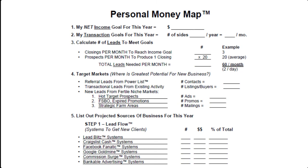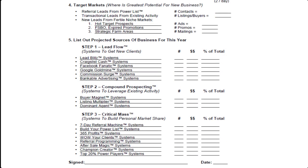So using our target of $100,000 net, to achieve that we've already calculated that we have to average out about three closed transactions per month. And we've also given an estimate here that it will take 20 leads per closed transaction. So if you take three per month multiplied by 20, you're looking at 60 leads — you have to generate 60 leads per month, or an average of two leads per day.